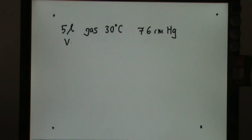This seems like V1, T1, and P1. This is a question of combined gas law. So we have P1V1 over T1 equals P2V2 over T2.